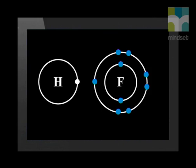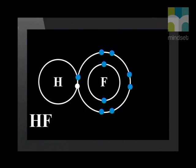A single covalent bond can also form between different types of non-metal elements. The example we look at now is hydrogen fluoride. Here is the energy level diagram for hydrogen and the energy level diagram for fluorine. We can see hydrogen has one valence electron and fluorine has seven valence electrons. Each needs one electron to complete their outer energy level.